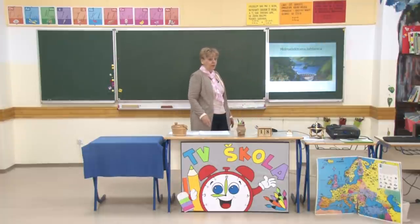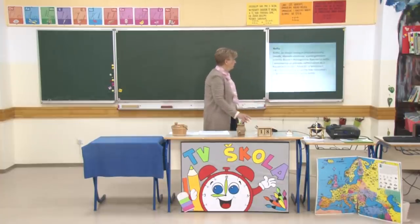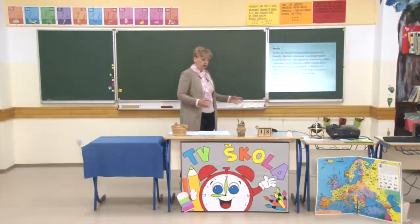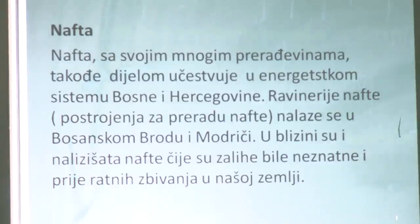Na rijeci Neretvi nalaze se hidroelektrane Jablanica, Grabovica, Salakovac i Mostar. Na rijeci Rami također je izgrađena velika hidroelektrana. Na rijeci Drini izgrađeno je više hidroelektrana, a najpoznatije su Višegrad i Zvornik. Na rijeci Vrbas izgrađene su hidroelektrane Jajce i Jajce 2, kao i hidroelektrana Bočac. Vode rijeke Trebišnice pokreću turbine nekolicine hidroelektrana, među kojima su najpoznatije Trebinje i Čapljina. Nafta - duži niz godina nafta se eksploatiše u Bosni i Hercegovini, a rafinerije nafte nalaze se u Bosanskom Brodu i Modriči.